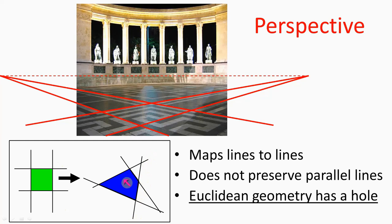This phenomenon is important because it is exactly what we observe when we look at a 3D scene and examine parallel lines around us — even parallel lines meet at the horizon. In computer graphics we want to simulate this perspective phenomenon as well, so we are looking for a formula which maps lines to lines, but can generate two intersecting lines out of two parallel lines.